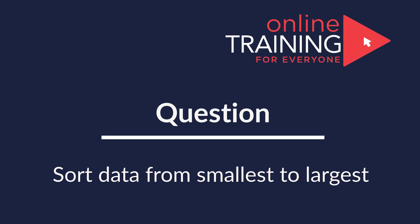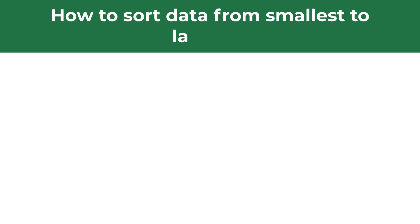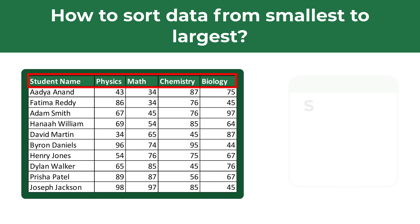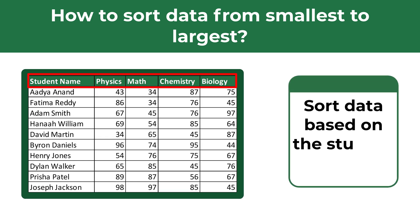A lot of times you might get a question on how to sort data in Excel from smallest to largest. For example, you might be presented with a data set showing student names and their grades in different subjects — here we see grades in physics, math, chemistry, and biology — and you need to sort this data set based on the student names.